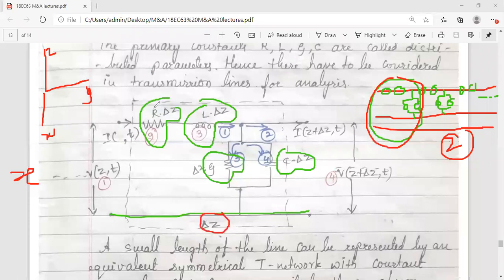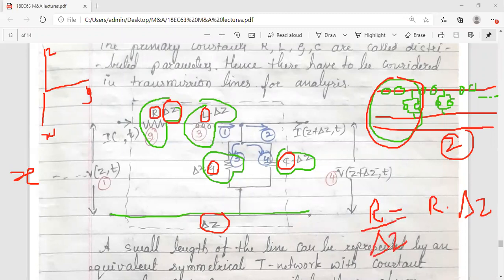If I take the complete length of the line as Z, a smaller part is taken as delta Z. That's why if you observe, each parameter - resistance, inductance, conductance, and even capacitance - they are not simply R, L, G, C. They are multiplied by delta Z because this is per unit length. Resistance per unit length is R into delta Z, so every parameter is multiplied by delta Z.